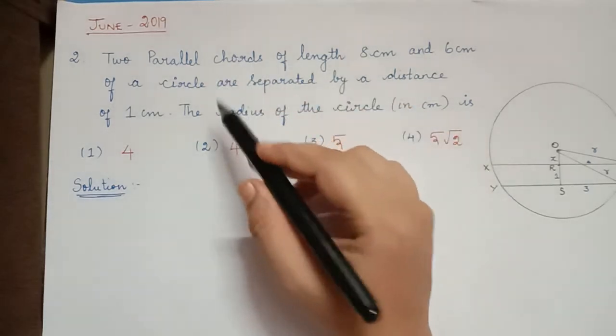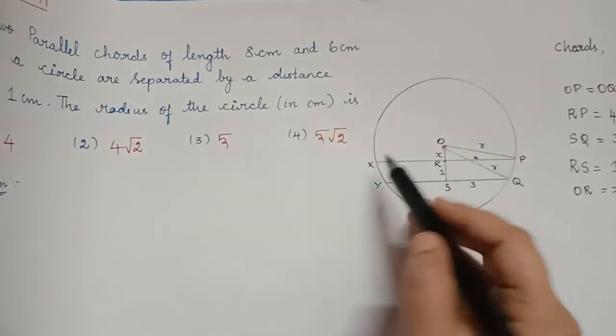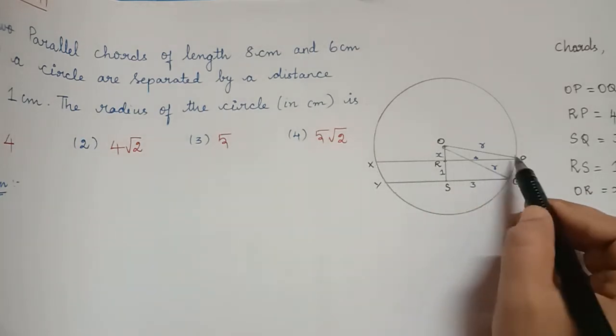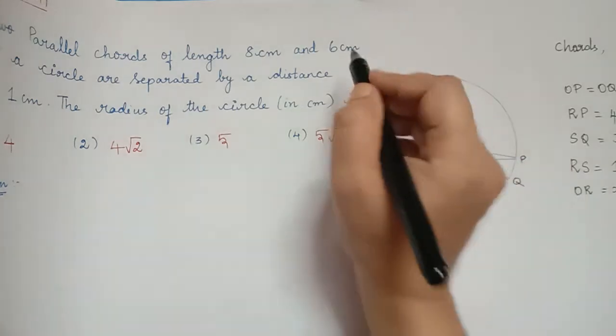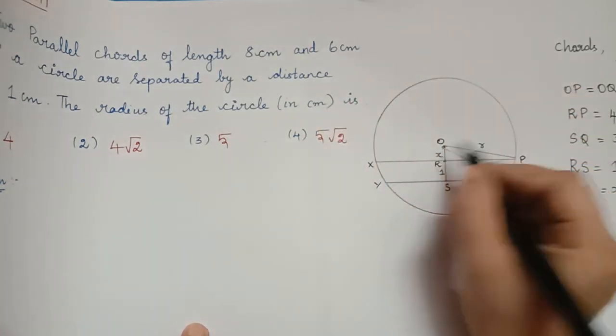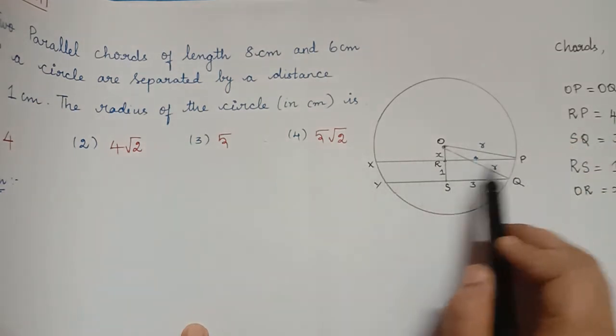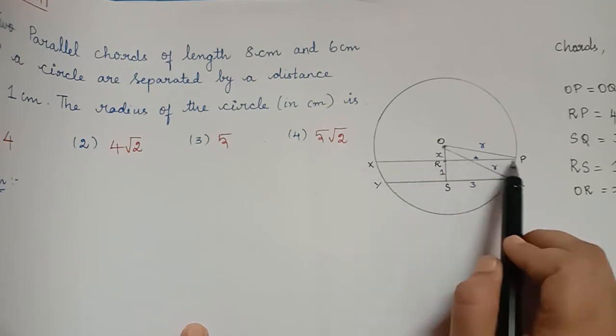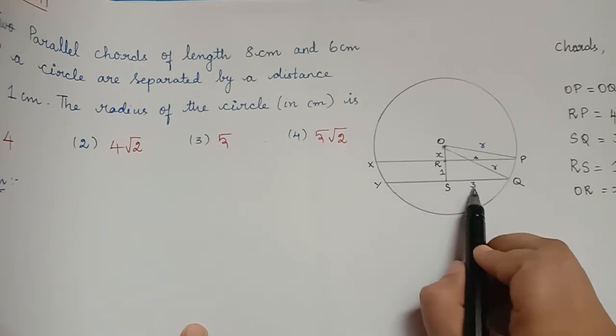In order to solve this problem, we shall draw a circle and the chords XP and YQ. The length of the chord XP is 8 cm and the length of the chord YQ is 6 cm. Let O be the center of this circle. The perpendicular drawn from the center of this circle divides the chords into two halves. So, XR and RP will be 4 cm and YS and SQ will be 3 cm.